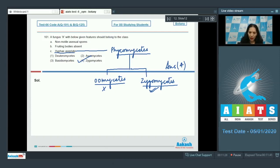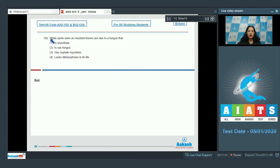Let's move to the next question. Question number 102: White spots seen on mustard leaves are due to a fungus. Which fungus causes white spots on mustard? It is Albugo, and the full name is Albugo candida, so it causes white rust of crucifers.